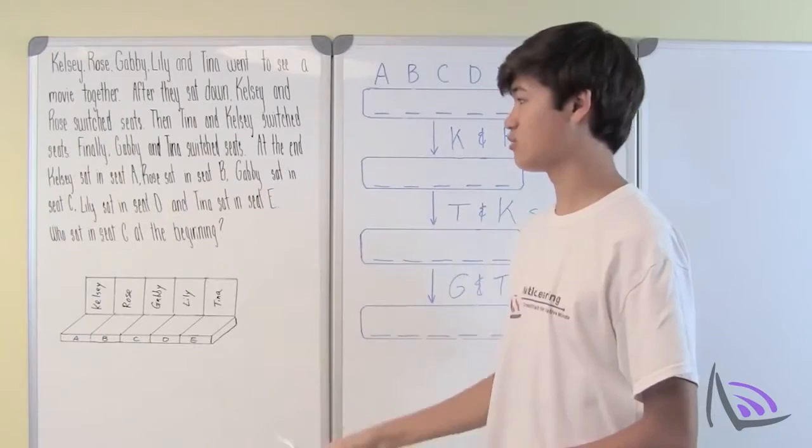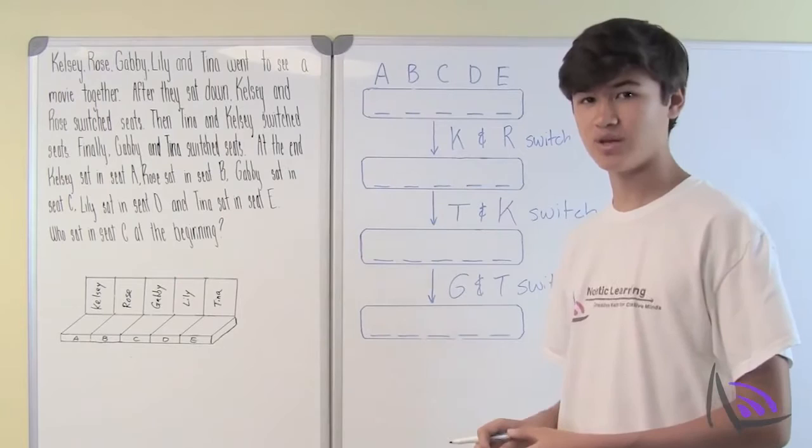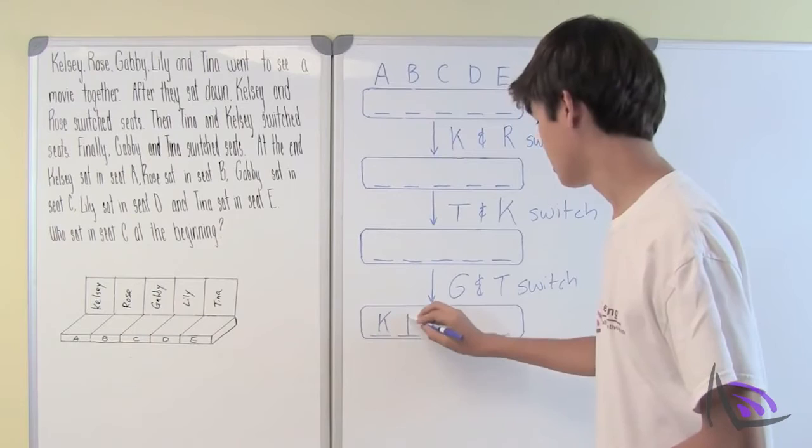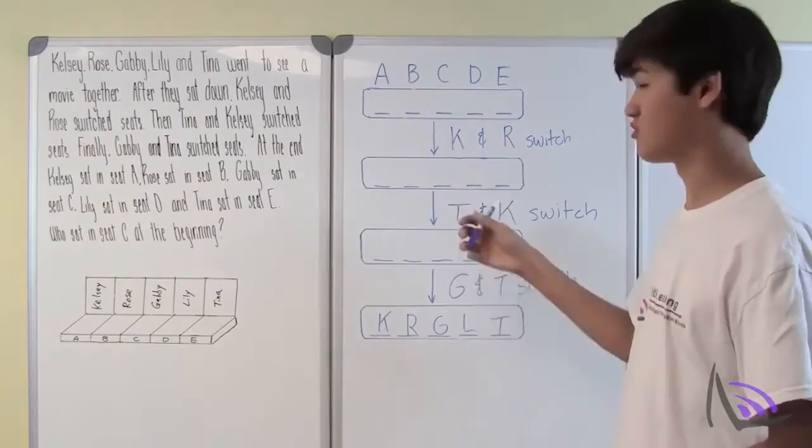They tell us that at the end, Kelsey sat in seat A, Rose sat in seat B, Gabby sat in seat C, Lily sat in seat D, and Tina sat in seat E. They just told us the final seating arrangement, so we can put that right on the flowchart: Kelsey, Rose, Gabby, Lily, and Tina.